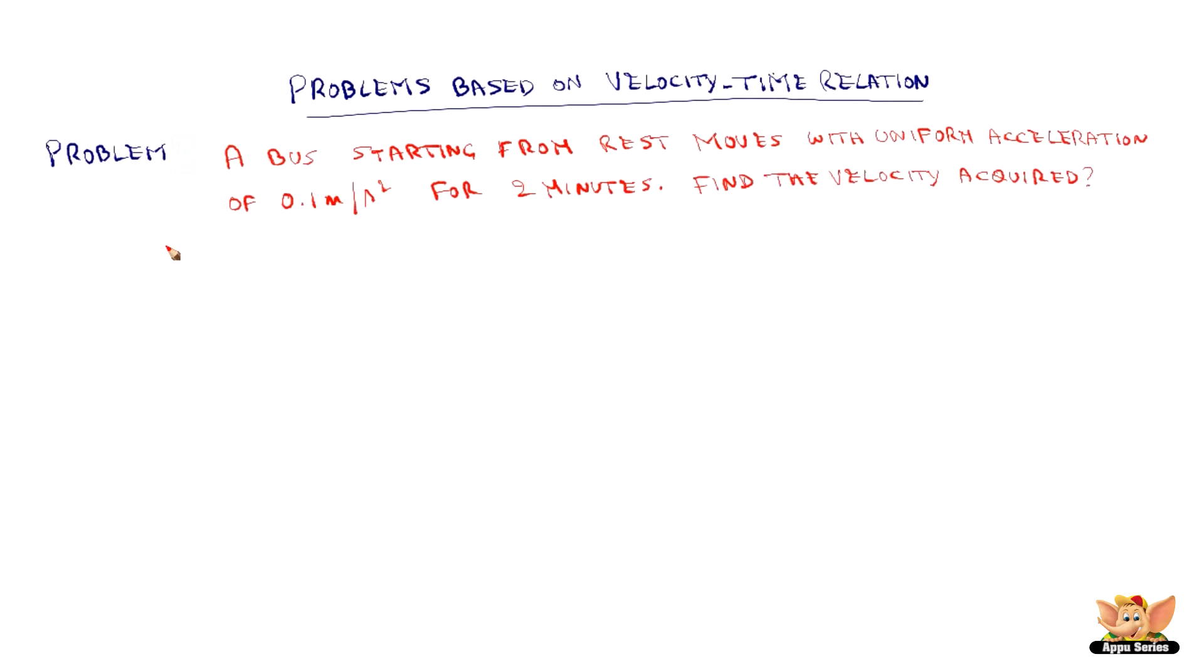Now, the given data in this problem is: initial velocity of the bus u is equal to 0 meter per second as the bus starts from rest.